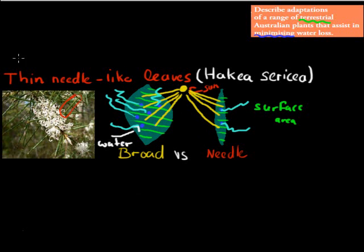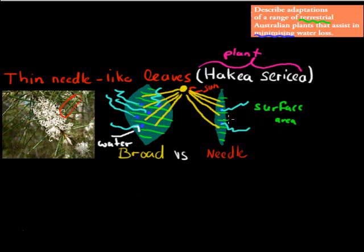So that's one adaptation that plants can have to minimize water loss — needle-like leaves. The Australian example is the Haccia sericea. Remember, surface area is just the area of the surface that is exposed.